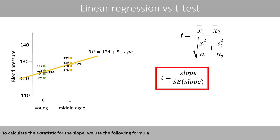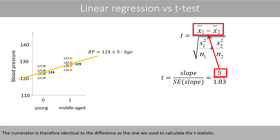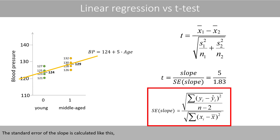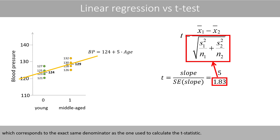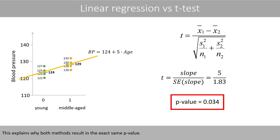To calculate the t-statistic for the slope, we use the following formula. The numerator is therefore identical to the difference used to calculate the t-statistic. The standard error of the slope is calculated in a way that corresponds to the exact same denominator as the one we use to calculate the t-statistic. This explains why both methods result in the exact same p-value.